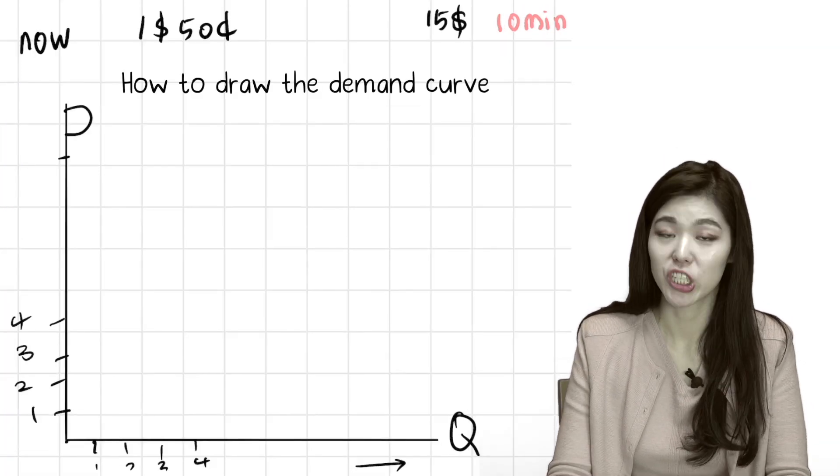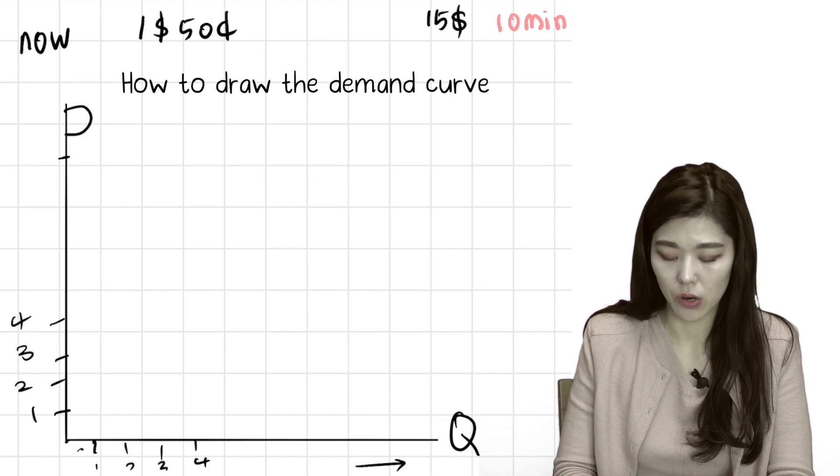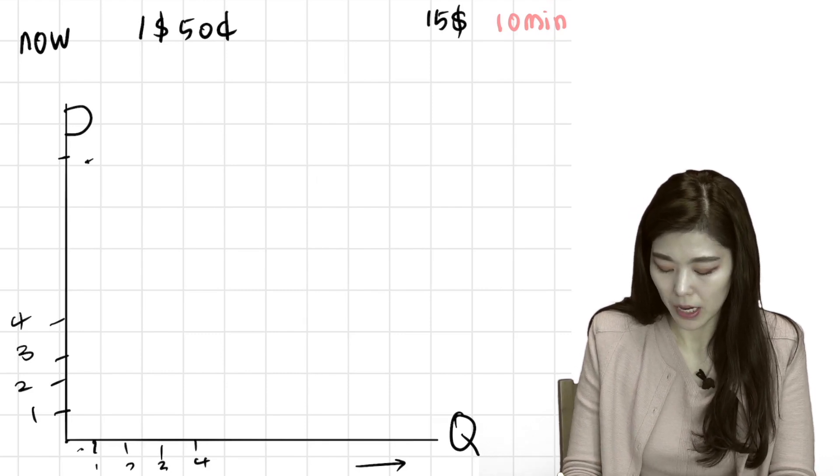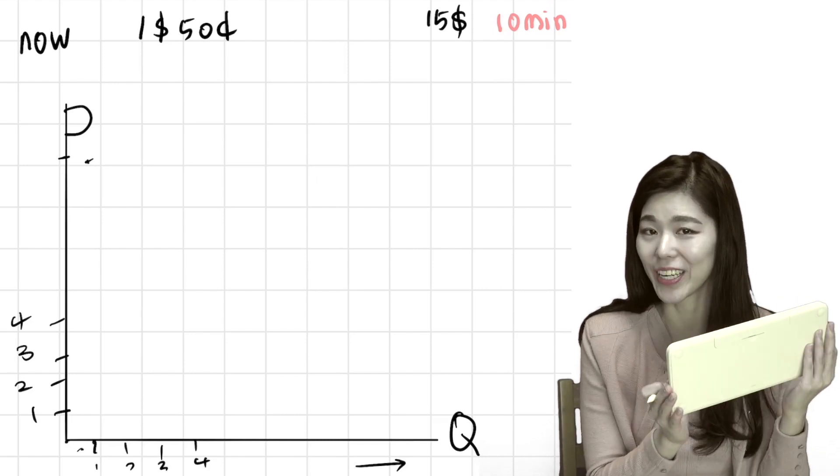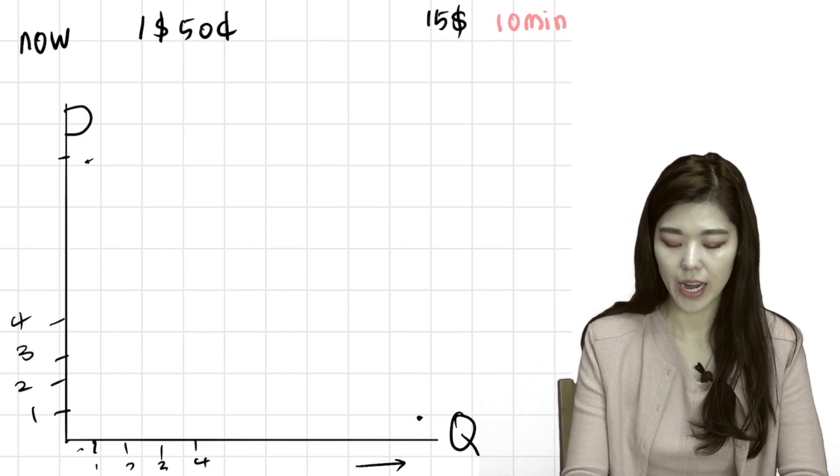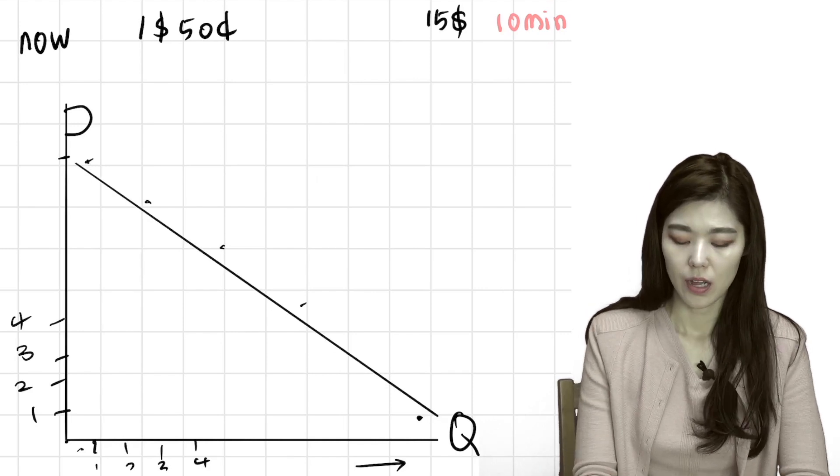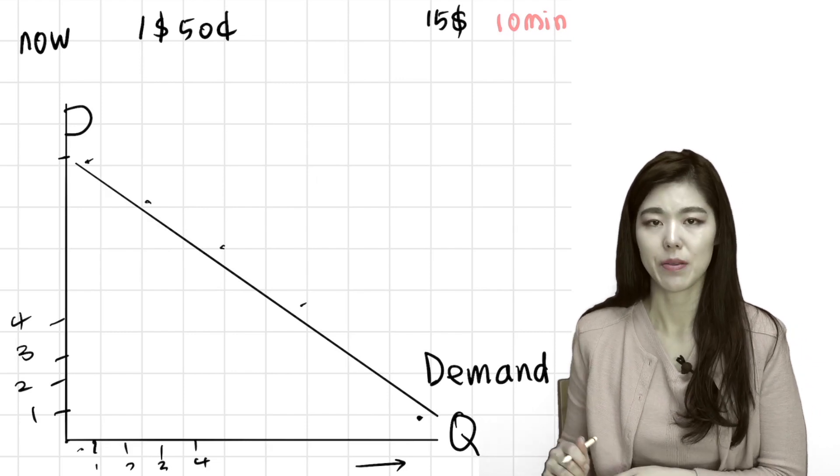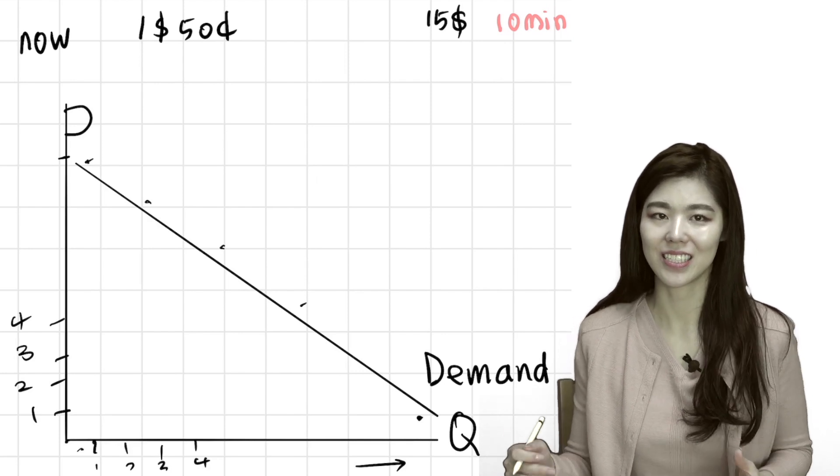So remember that when a good is really expensive, then less people buy it. Number of the quantity sold is very low. So maybe plot here for a high price. But then when the price is really cheap, like one dollar for, I don't know what's near me, this keyboard, then a lot of people are going to be willing to buy this. So lots of people. So you connect these dots like these. And then you will get a downward sloping demand curve. A demand curve is always downward sloping. Just remember it this way: demand downward sloping, same D. Demand downward sloping. It's easy to remember, right?